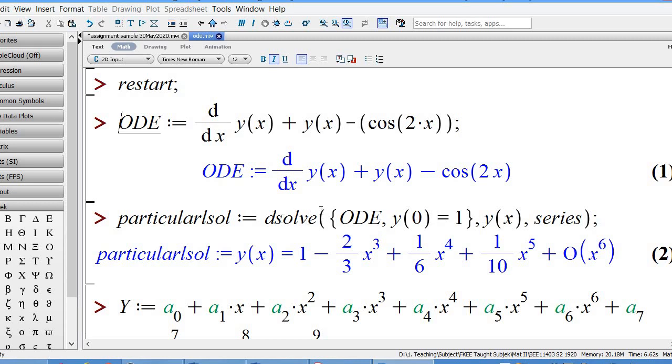If you want to solve it using the power series method, then you have the command dsolve. For any command in Maple you must open and close the parenthesis. So dsolve the ODE with the initial condition, you have curly bracket ODE comma y(0) equal to 1, close curly bracket, comma y(x), comma series.